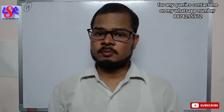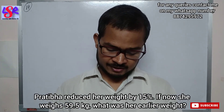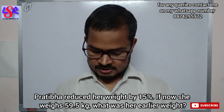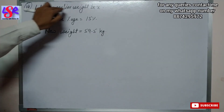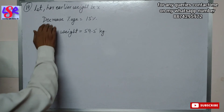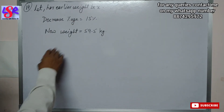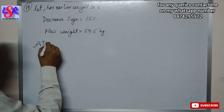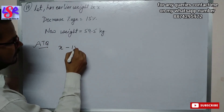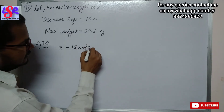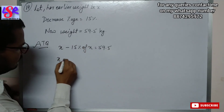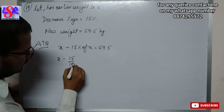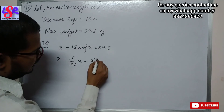Now let's see question number 19. Prithibhar reduced her weight by 15%. If now she weighs 59.5 kg, what was her earlier weight? We assume her earlier weight to be x. Decrease percentage is 15% and the new weight is 59.5 kg. So according to the question, x minus 15% of x equals 59.5. This gives x minus 15 upon 100 times x equals 59.5.